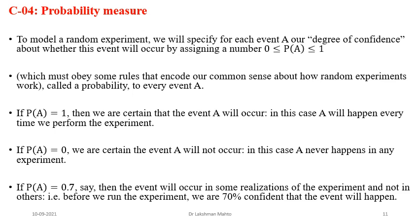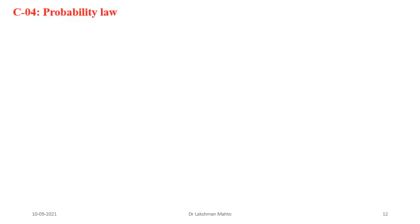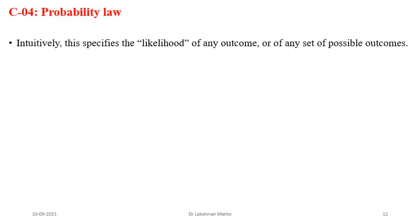If you take an event with probability 0.7, that means the event will occur in some realizations of the experiment but not in others. We are 70 percent confident that event will occur, and 30 percent we can't say — it may not occur. When the number comes between 0 and 1, it's talking about a realization concept, where some kind of condition is being imposed.